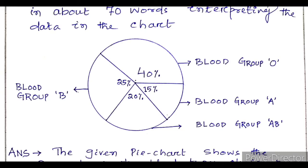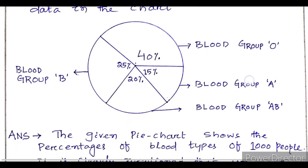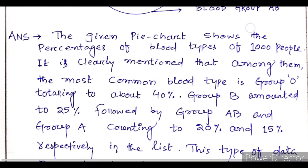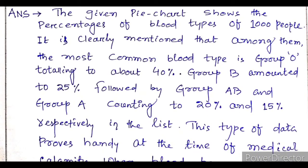40 percent have blood group O — so out of 1000 people, we can say about 400 people have blood group O. 25 percent have blood group B. 20 percent have blood group AB. And 15 percent have blood group A. So this nonverbal figure data shows how many percent of people have which blood group, and we have to describe it in verbal form in a paragraph.